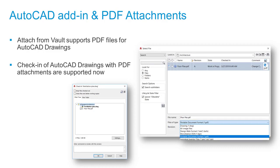With billions of DWG and PDF files actively used around the globe, many Vault customers use PDF alongside DWG throughout their design and documentation process. AutoCAD supports attaching PDF files as an underlay so the PDF can be associated with a given DWG. Vault 2020 includes two improvements for this. First, the standard check-in workflow now supports the associated PDF being checked in directly alongside the DWG. Second, you can now attach PDF files from Vault directly — the Attach from Vault dialog contains a PDF file option so you can attach vaulted PDFs to AutoCAD DWGs.